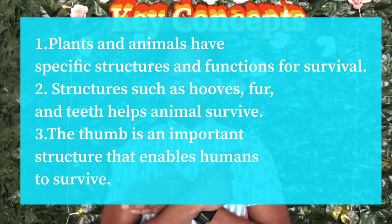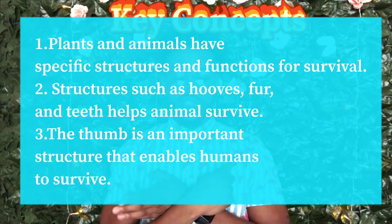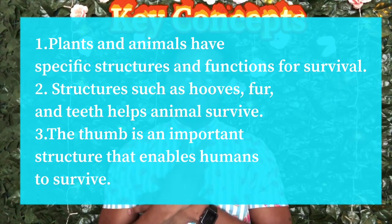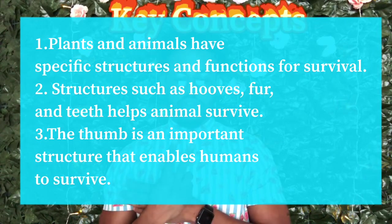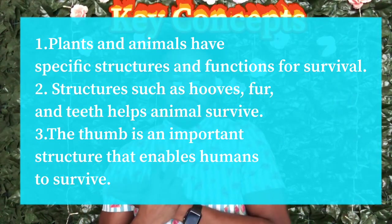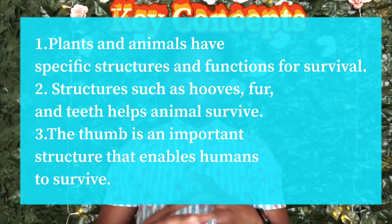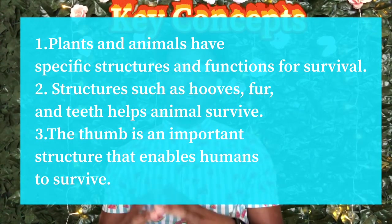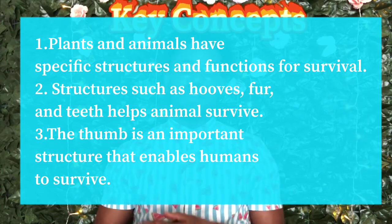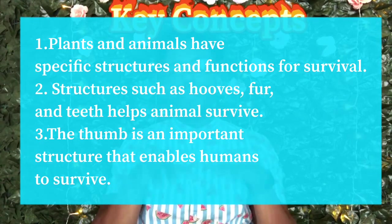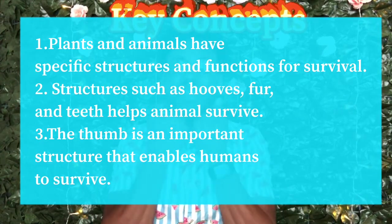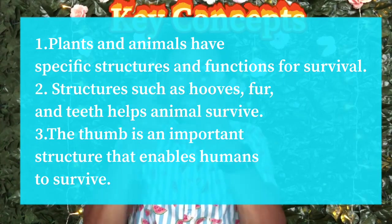We have three major key concepts. One: plants and animals have specific structures and functions that enable them to be successful in specific environments. Two: examples of structures that enable animals to survive are the hooves of bison, the webbed feet of ducks, and the claws of squirrels — different body parts that help animals survive in the areas where they live. Three: the thumb is an important structure that enables human beings to survive.